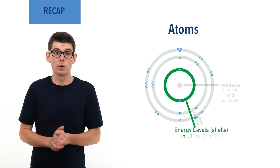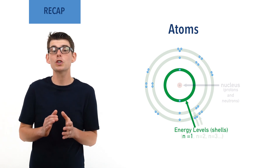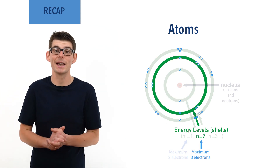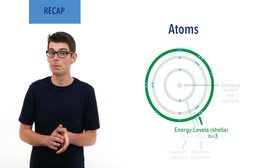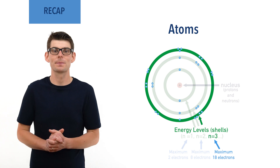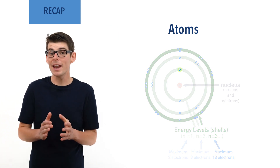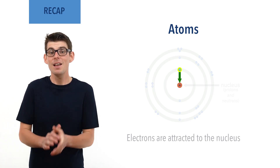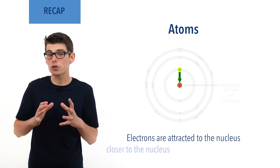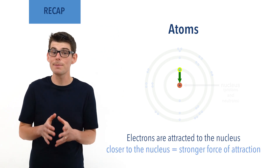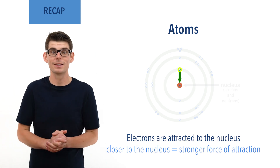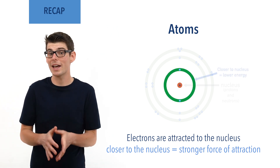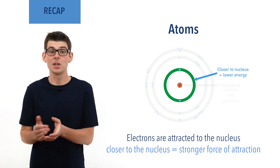The first energy level, with a principal quantum number of one, can hold two electrons. The second, with a principal quantum number of two, can hold eight electrons. The third, with a principal quantum number of three, can hold 18 electrons. As they have a negative charge, electrons are electrostatically attracted to the positive charge of an atom's nucleus. The closer an electron is to the nucleus, the stronger this force of attraction and the more stable and lower in energy the electron is. This means electrons in energy levels closer to the nucleus are lower in energy and more stable than electrons in energy levels further from the nucleus.